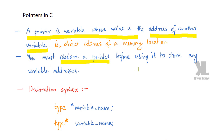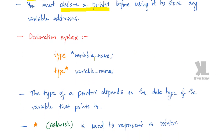You must declare a pointer before using it. A pointer can be declared — first we have to mention the type. We have various data types already discussed: integer, float, double, character. First we have to mention the type, then we use an asterisk symbol — a star symbol — and then we specify the variable name, followed by a semicolon. This is the declaration.